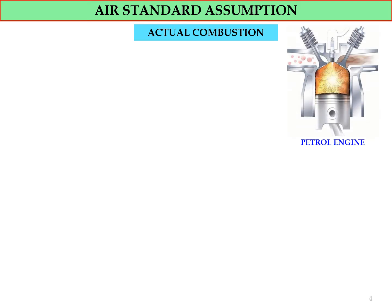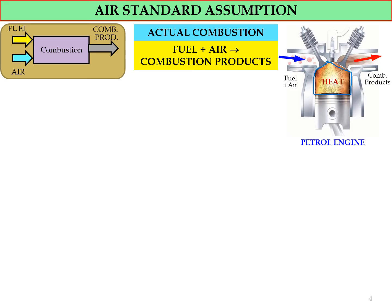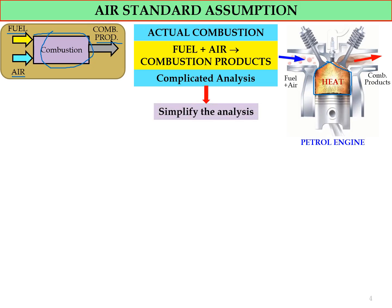First, we look at the actual combustion process in an internal combustion engine. The intake consists of fuel plus air, shown as a blue arrow. Combustion occurs in the closed combustion chamber, heat is added, and the output is the combustion products, shown as a red arrow. If we simplify the petrol engine, we have fuel intake, air intake, a combustion process, and then the combustion products as output. This system is complicated, so we need to simplify the analysis.